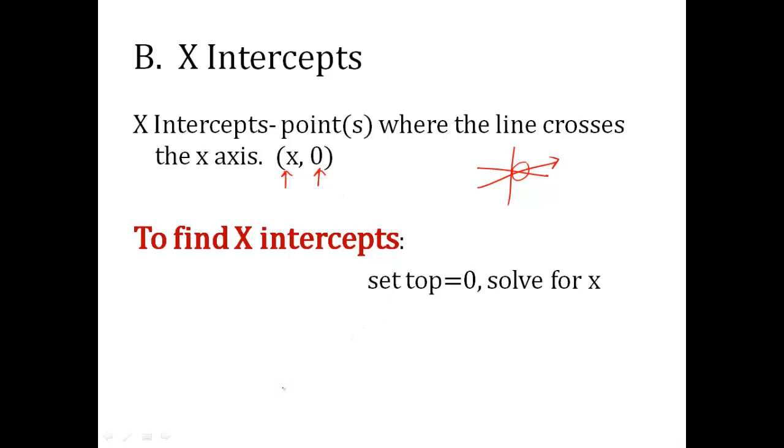To find x-intercepts of a rational function, you're going to set only the numerator, the top of the fraction, equal to 0, and solve it for x. Okay, you don't do the bottom because that would make it undefined. We just worry about the top for x-intercepts.